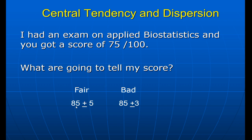Now if the mean is 85 and the standard deviation is 5, I am going in the minus direction: 85 minus 5 is 80, minus 5 is 75 — I'm a little from the mean, but still fair. However, if the mean is 85 and the standard deviation is 3, I am very bad. This is a very different concept — you have to listen to this lecture more than once to understand it. You cannot answer about a score unless I give you both the mean and the standard deviation.